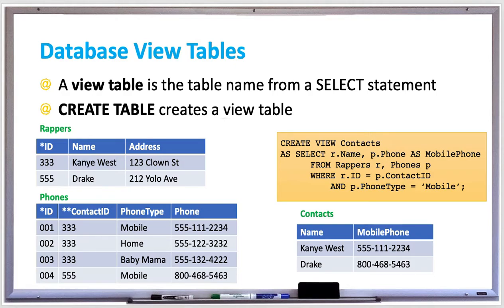Updating a view could also create issues with join views. In a join view, foreign keys of one base table may match primary keys of another. A delete from a view could delete foreign key rows only, primary key rows only, or both. The effect of the join view delete is undefined and not allowed.